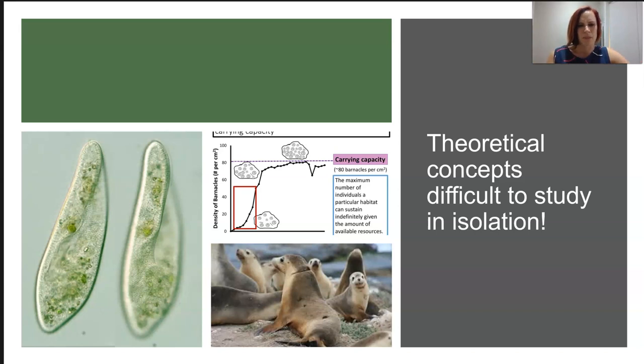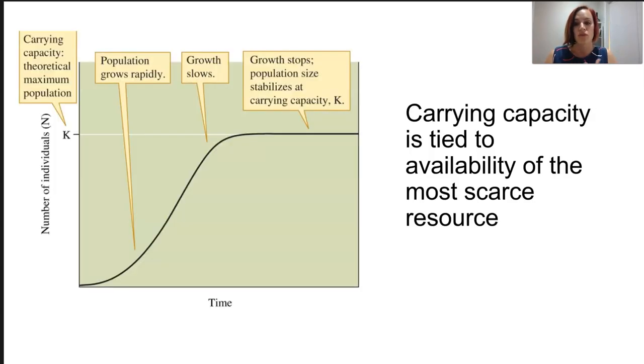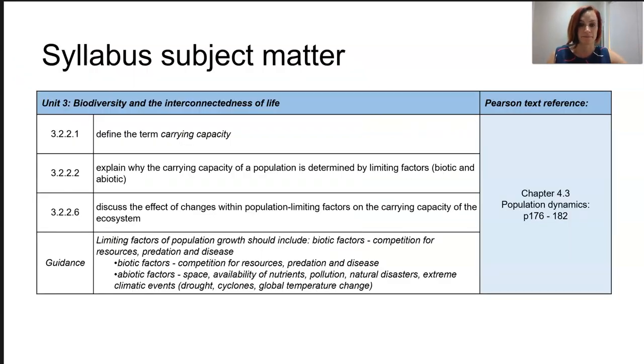Those barnacles are reaching carrying capacity for their species, but are they actually a different species? Is the presence of another organism stopping them from spreading — is it competitive exclusion? Carrying capacity is tied to the most scarce resource in that ecosystem — that one factor hanging on by a thread might be the tipping point for the carrying capacity of a particular organism. But there are so many factors at play that it's really hard to identify which one is that tipping point. That wraps up our discussion of carrying capacity today.